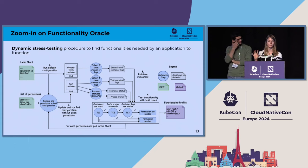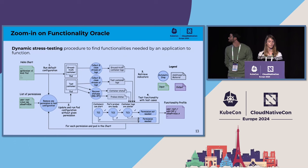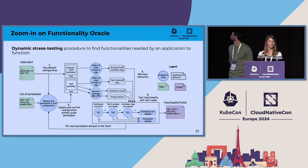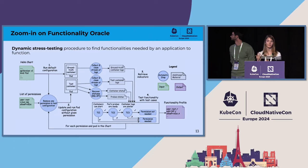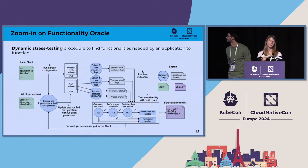I collect and clean the stream of logs from the ground truth container with the given permission and from the test container without the given permission. For the test container, I also recover the statuses from the pods, containers, and probes. As a final step — step four — I test the functionality of the pod without the given permission, using three test cases. TC1 checks that the container can start without errors. If TC1 is okay, TC2 checks the liveness and readiness probes. And TC3 semantically compares the logs from the ground truth and test containers.